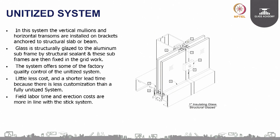The unitized system is completely factory made — also called a unit panel system — where the panels are floor-to-floor height. These panels are assembled at the factory along with the glass and brought to site. The anchors and brackets are installed onto the supporting structure, and the panels are installed onto the brackets. Quality can be maintained, and manual effort is significantly reduced, with labour time and erection costs more in line with the stick system.